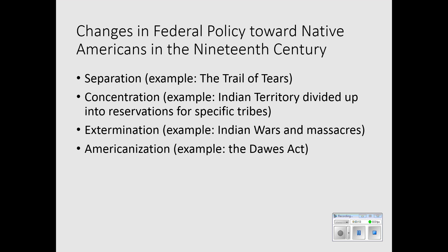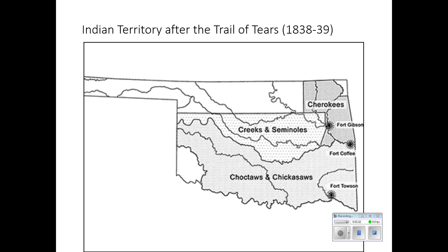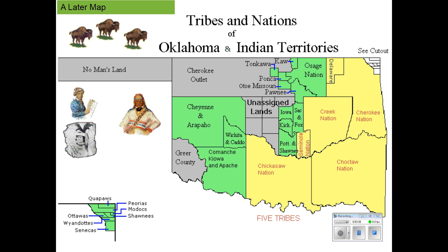We've already talked about separation in the period before the Civil War. This is the Indian Territory after the Trail of Tears. There are some general areas where one group or another was moved to, but if you look at that same map in the period after the Civil War, you can see how complex these reservations were. There are many divisions of what will become Oklahoma, and the different tribes are designated for one area or another. Of course, if you go to Oklahoma now, you'll find that they don't control most of this land, which again is an indication of the violation of treaties and agreements.